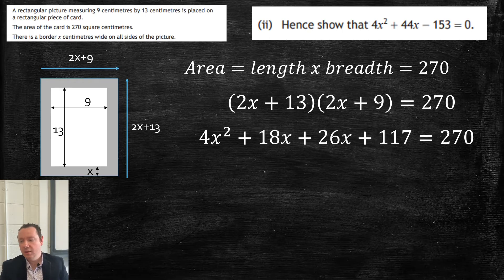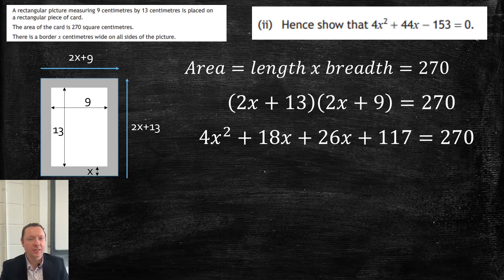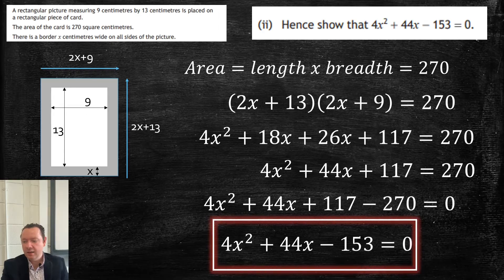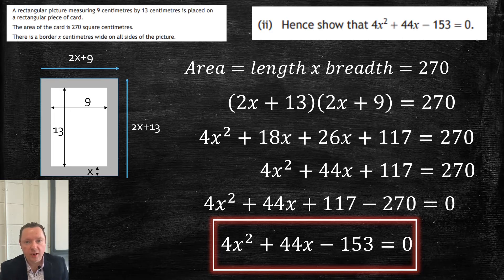Collecting terms: 4x squared plus 44x plus 117 equals 270. Taking 270 over to the left gives 4x squared plus 44x minus 153 equals 0, which is exactly what was required. If you can't follow the construction, don't lose hope — you can still do the last part because it's just solving a quadratic with the quadratic formula.